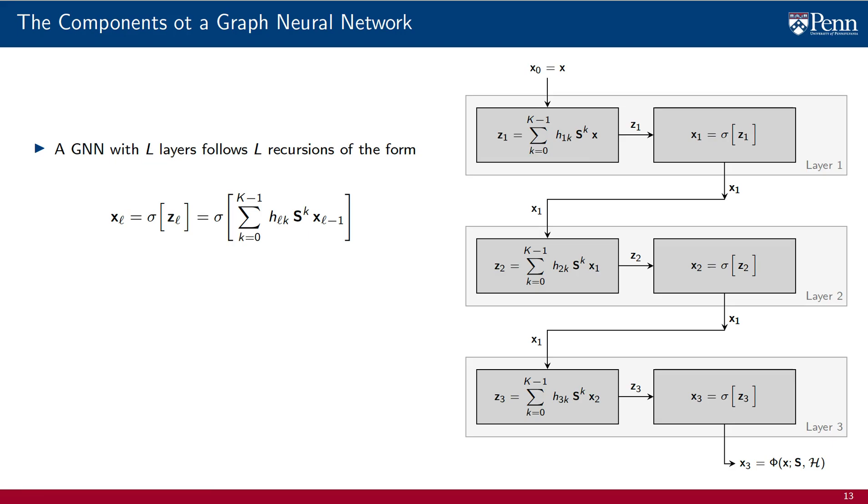A GNN with L layers is defined as L recursive compositions of graph perceptrons, in which the input signal x is rewritten as x sub 0. This is a composition of L layers, each of which is itself a composition of a filter with a pointwise nonlinearity.